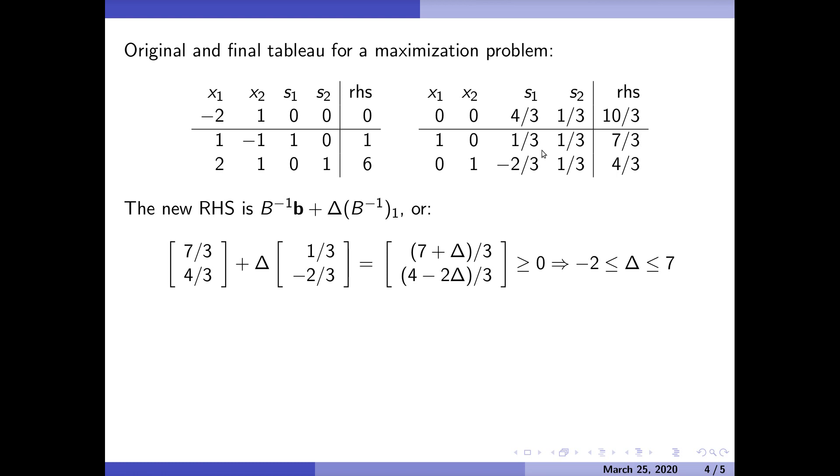How would I compute the second one? If I want to change six to six plus delta, then I take 7/3, 4/3 and add delta times 1/3, 1/3, and I want that to be greater than zero.